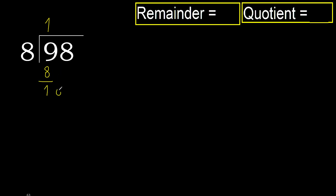Next, 18. 8 multiplied by 3 is 24 — 24 is greater. Multiplied by 2 is 16, not greater. OK, subtract — 2.